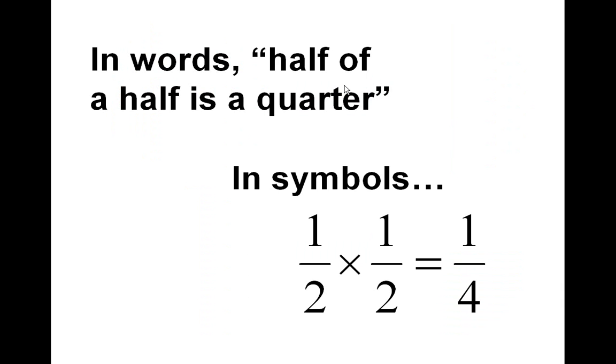In maths, the word of nearly always means times. Now, you may notice that two times two is four. I suppose you could say two plus two is four as well, but that's coincidental.